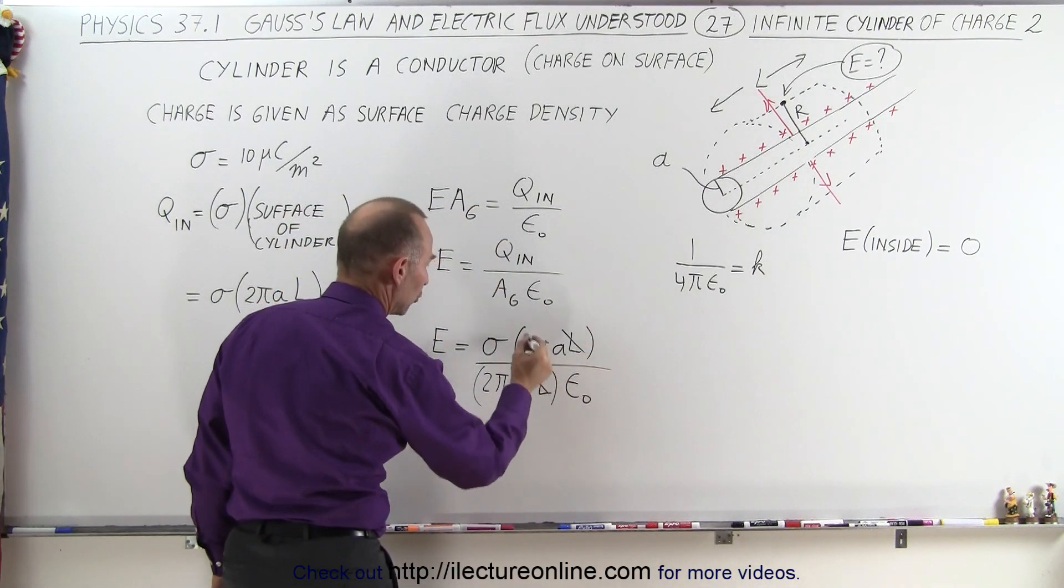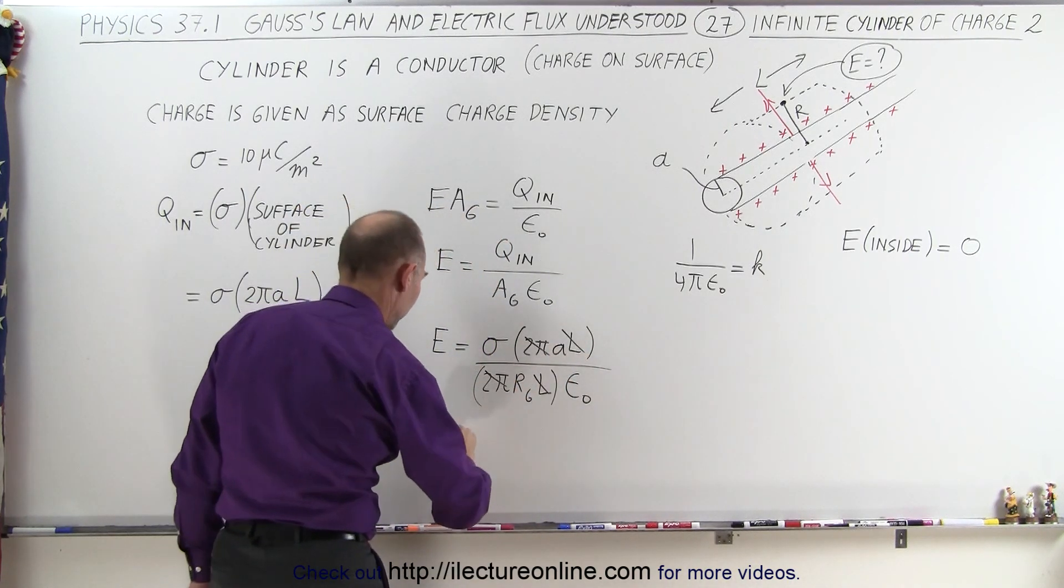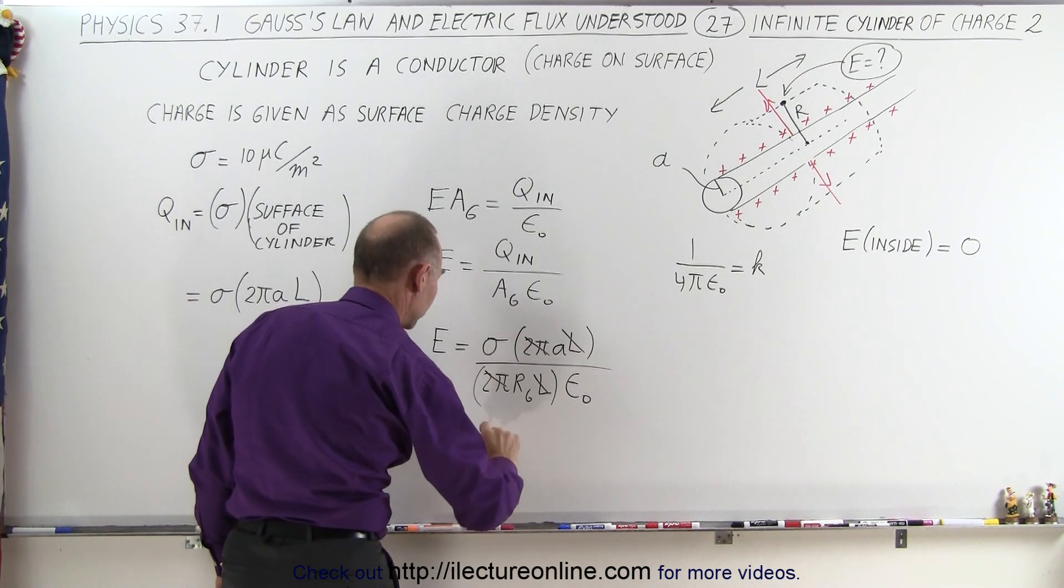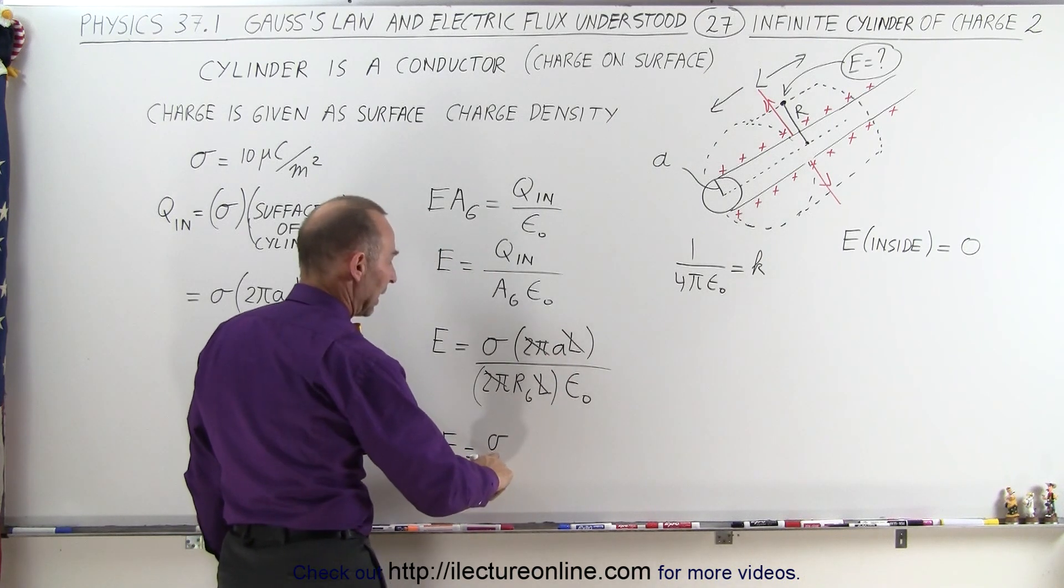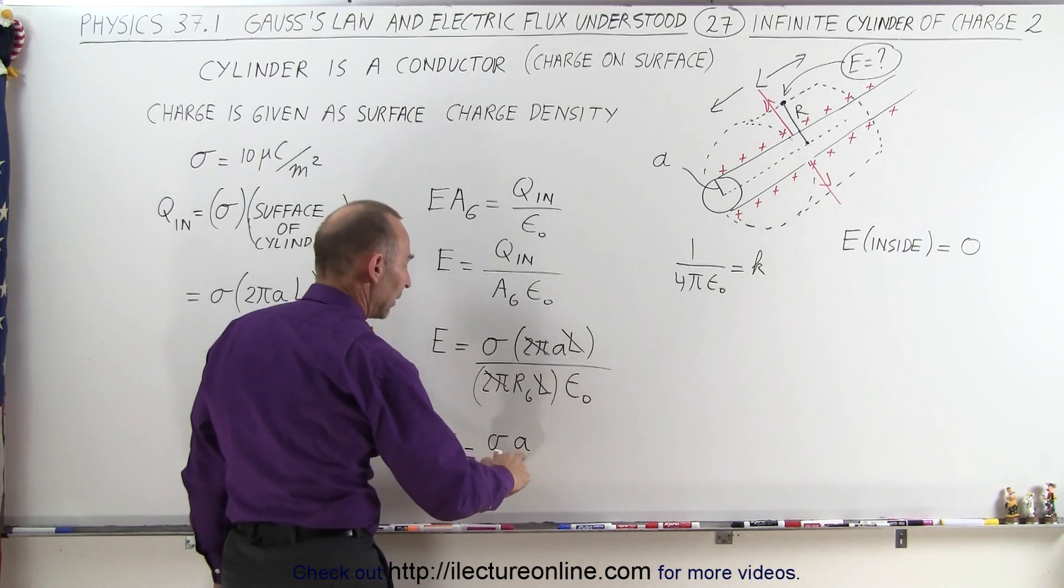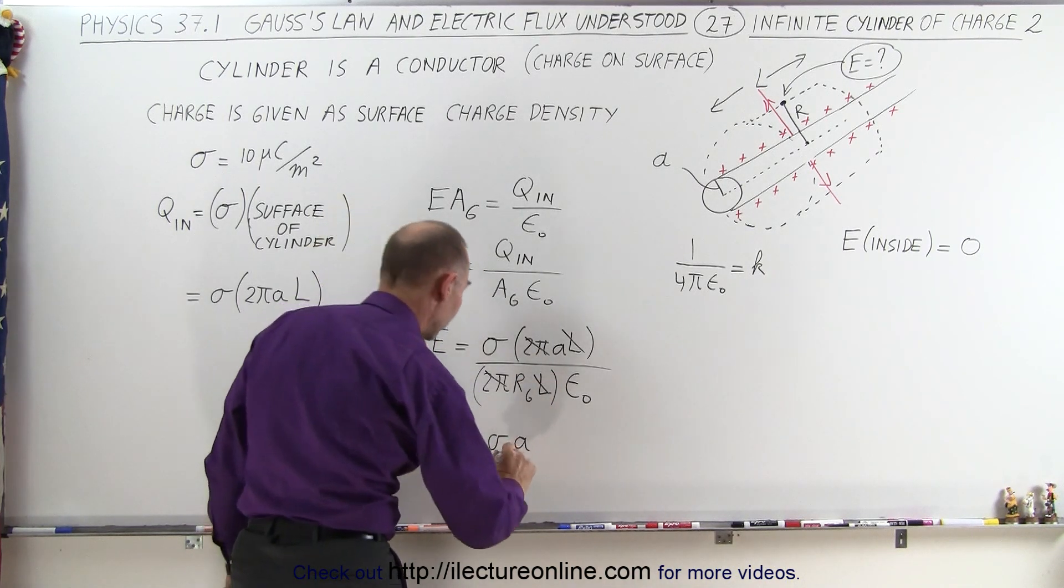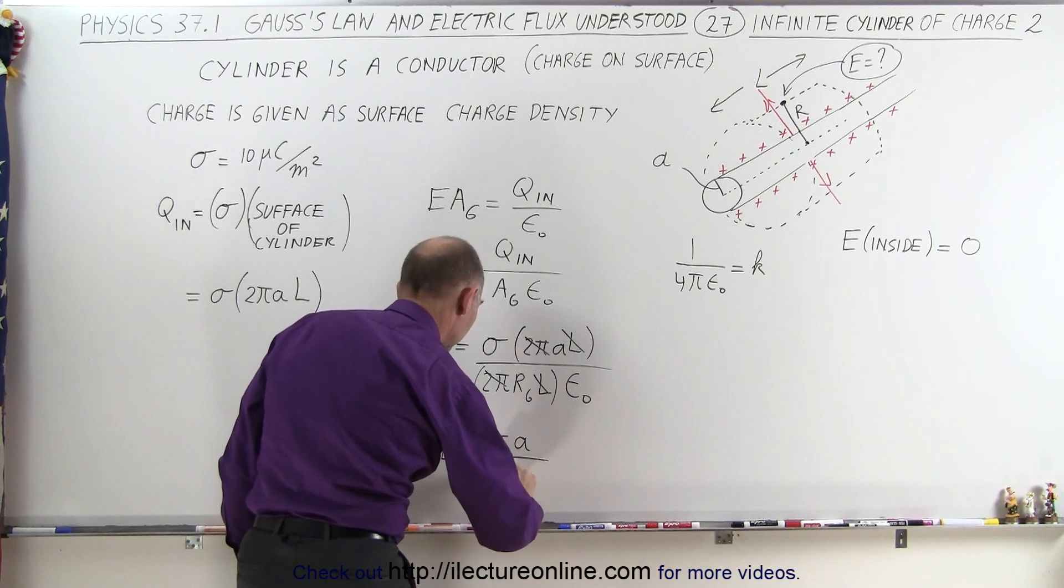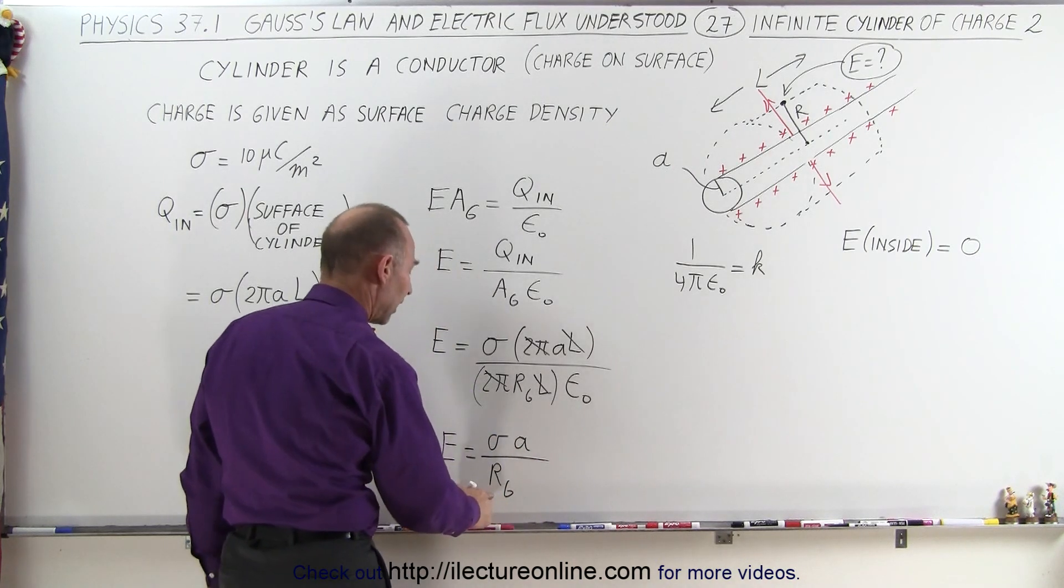Notice that the L's cancel, the 2π's cancel, and we're left with the electric field is going to be equal to σ, which is the area charge density, times the radius of the cylinder, divided by R_G, which is the radius of the Gaussian cylinder.